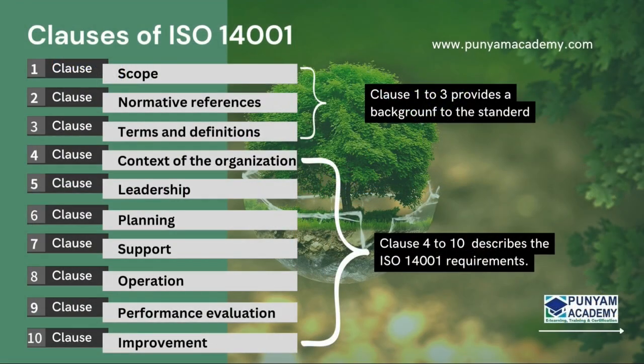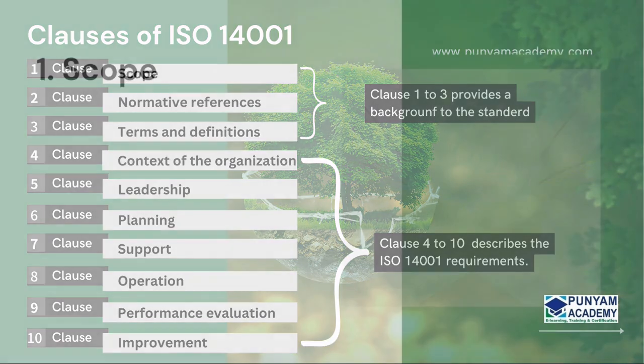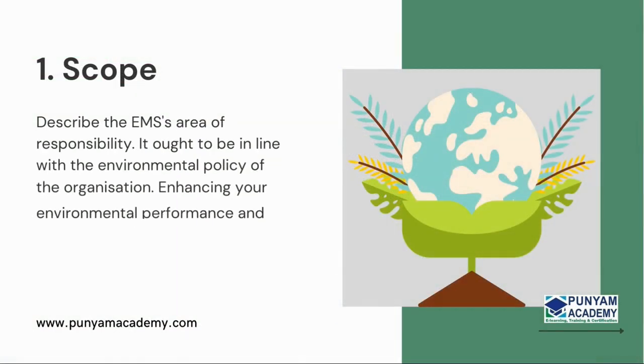ISO 14001:2015 Environmental Management Systems standard consists of 10 clauses. The first three clauses, 1–3, provide a background to the standard, and the seven main clauses, 4–10, describe the ISO 14001 requirements. If you're interested in obtaining ISO 14001 certification but are unsure of the steps involved, taking a closer look at the 10 clauses should help.